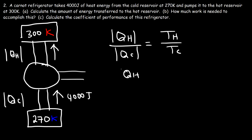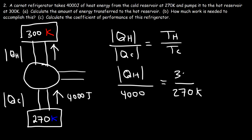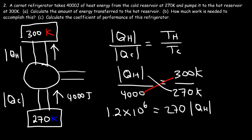We need to calculate QH. QC is 4,000 joules, TC is 270 Kelvin, and TH is 300 Kelvin. Cross-multiplying: 4,000 times 300 equals 1.2 times 10 to the 6, and that equals 270 times QH. So QH equals 1.2 times 10 to the 6 divided by 270, which gives 4,444 joules of heat energy going to the hot reservoir.